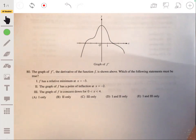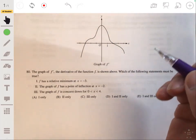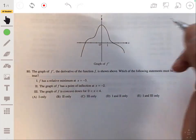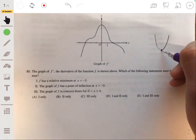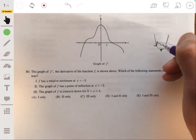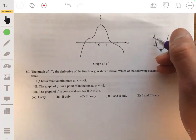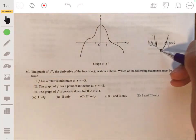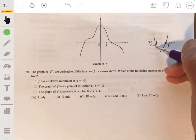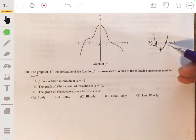Statement one says that f has a relative minimum at x equals negative 3. So let's first remember that there's going to be a relative minimum when a graph has a point at the very lowest, like something like this, and what happens is that the derivative goes from being negative to being positive.